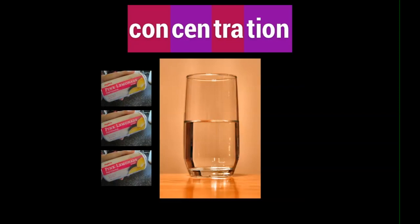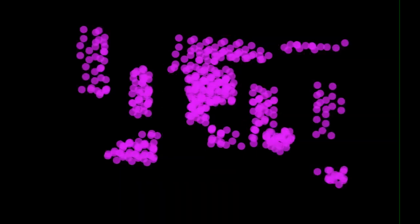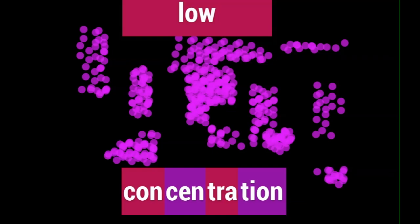Putting three things of pink lemonade inside just one glass of water would make something have a very high concentration. That means that all of the solutes would be very close together and they would probably be getting uncomfortable. However, if they're more spread out, that means they're at a low concentration.